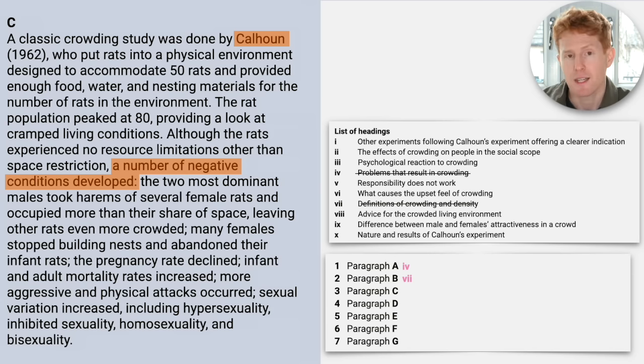Now careful. Some of you may have written that the answer is number nine, differences between male and female's attractiveness in a crowd. Now this paragraph does mention that. However, it mentions that as an example. It's not a general heading for the text. Don't get confused between details and what headings show, which is a general introduction to the paragraph. Remember, when a writer writes down a heading for a paragraph, they're doing that to make it easier for the reader to understand that paragraph. So as a result, it's going to be a general description of that paragraph.